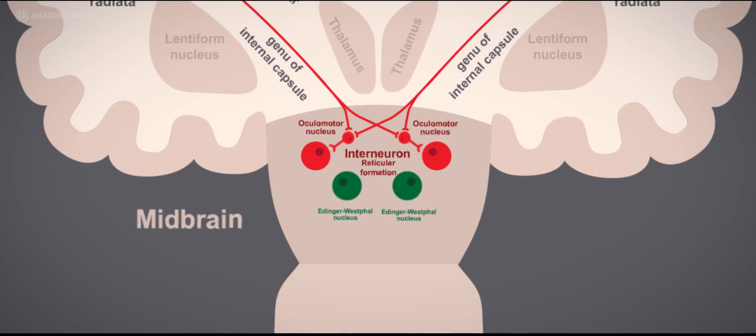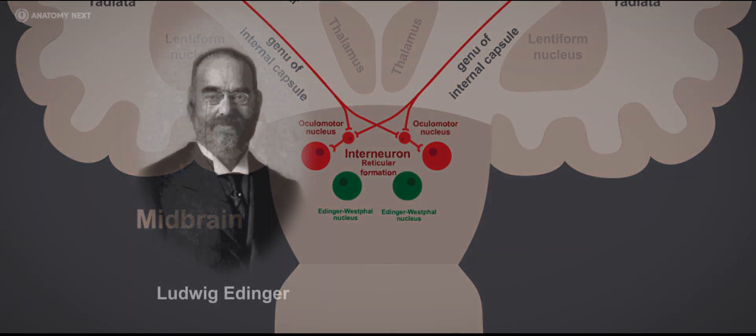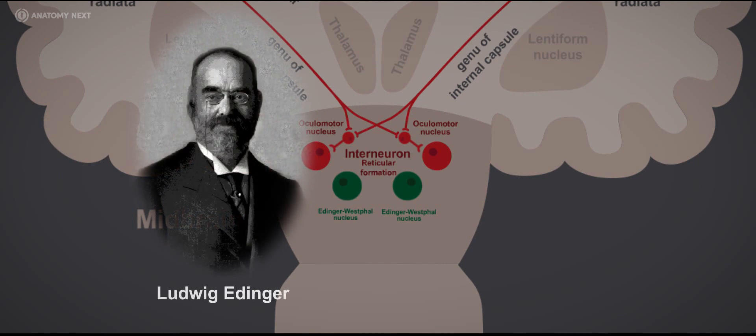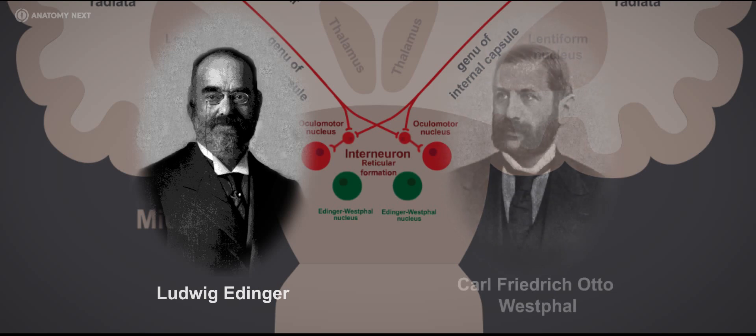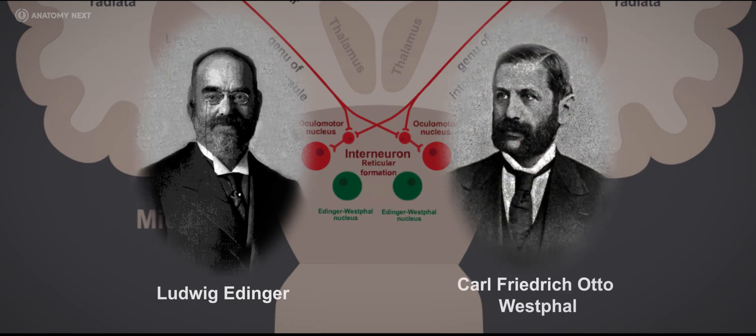The Edinger-Westphal nucleus is named after two German scientists, namely Ludwig Edinger, who described the nucleus in the human fetal brain in 1885, and Carl Friedrich Otto Westphal, who described it in the adult human brain two years later.